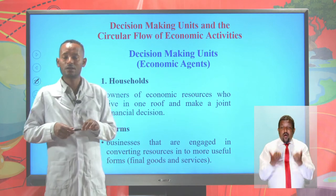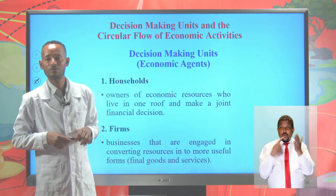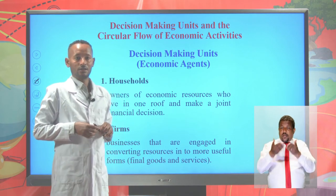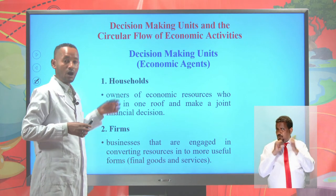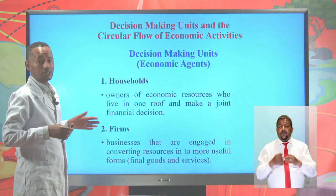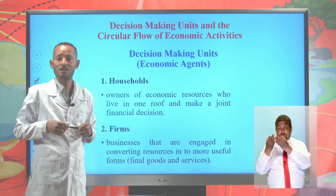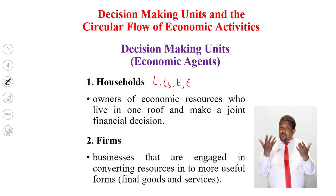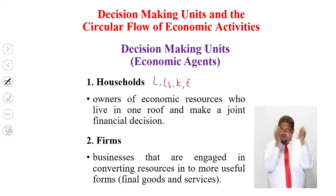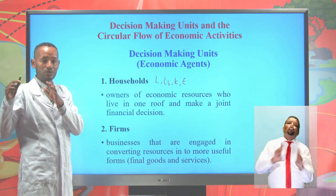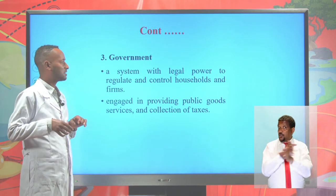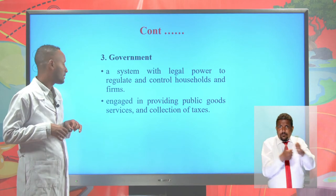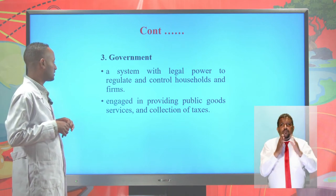There are three decision-making units or economic agencies: households, firms, and government. Households are those who live under one roof and make joint financial decisions; they are owners of economic resources — land, labour, capital, and entrepreneurship. Firms are those engaged in converting economic resources into more useful forms — into final goods and services. Government is a system with legal power to regulate and control households and firms, providing public goods and services and collecting taxes.